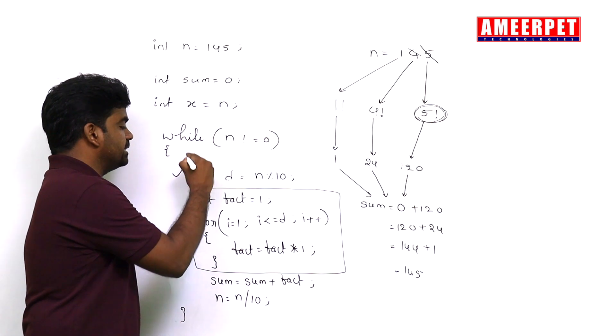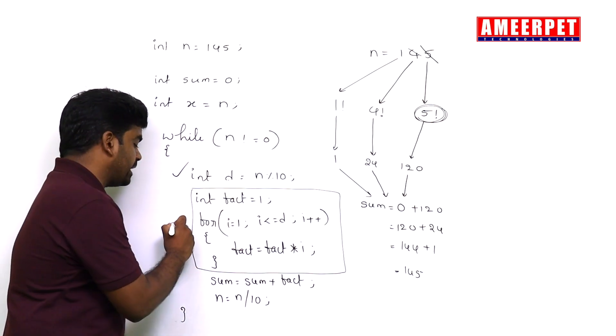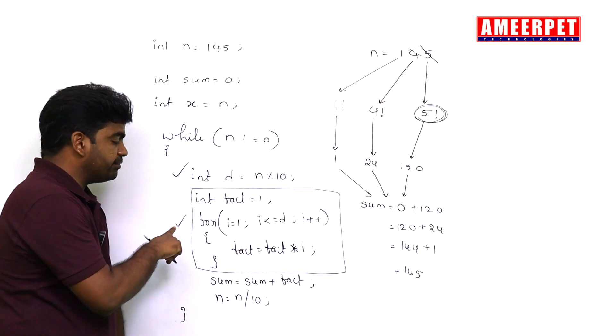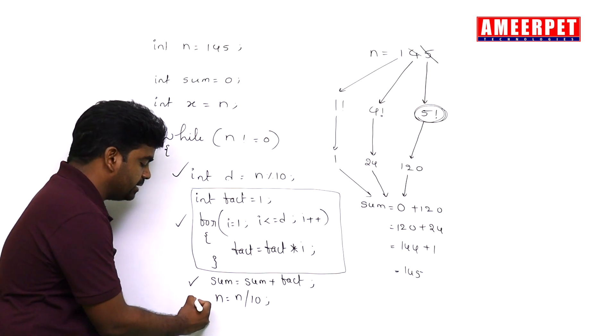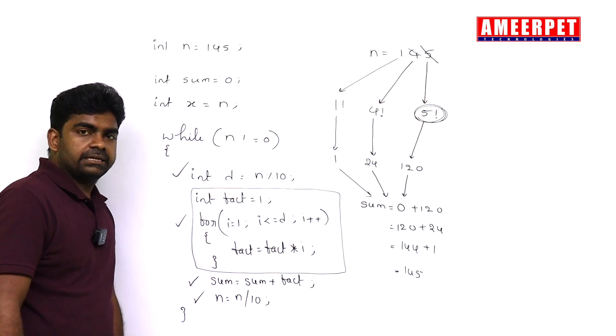This is getting the digit, this is finding the factorial for that digit. After finding the factorial, this is adding to the sum. And finally, this is removing that digit to continue with the next iteration.